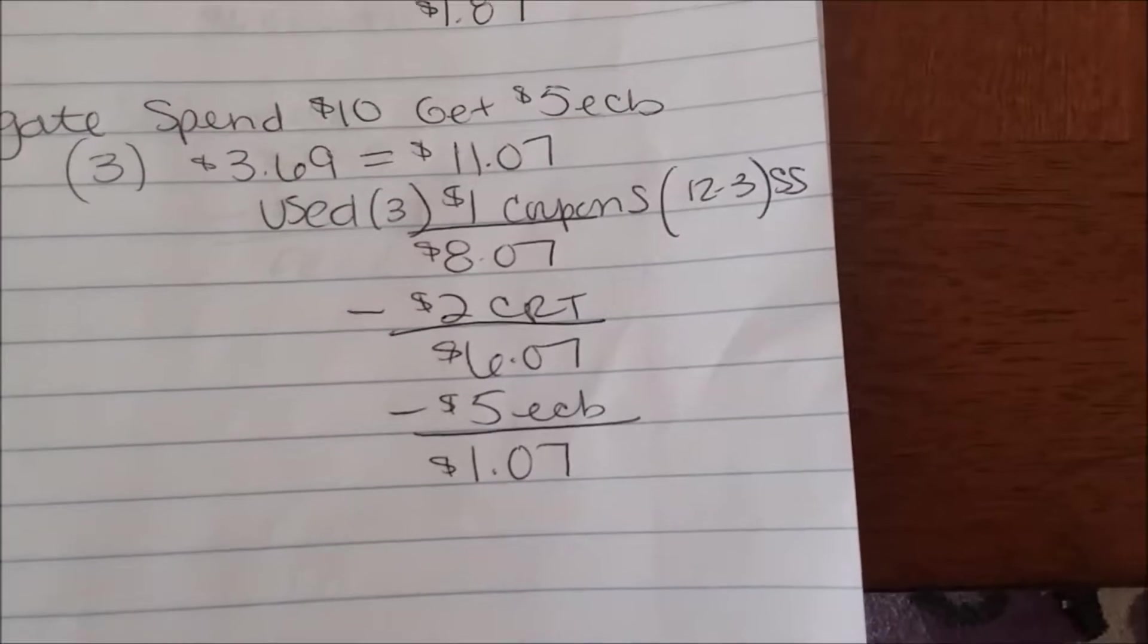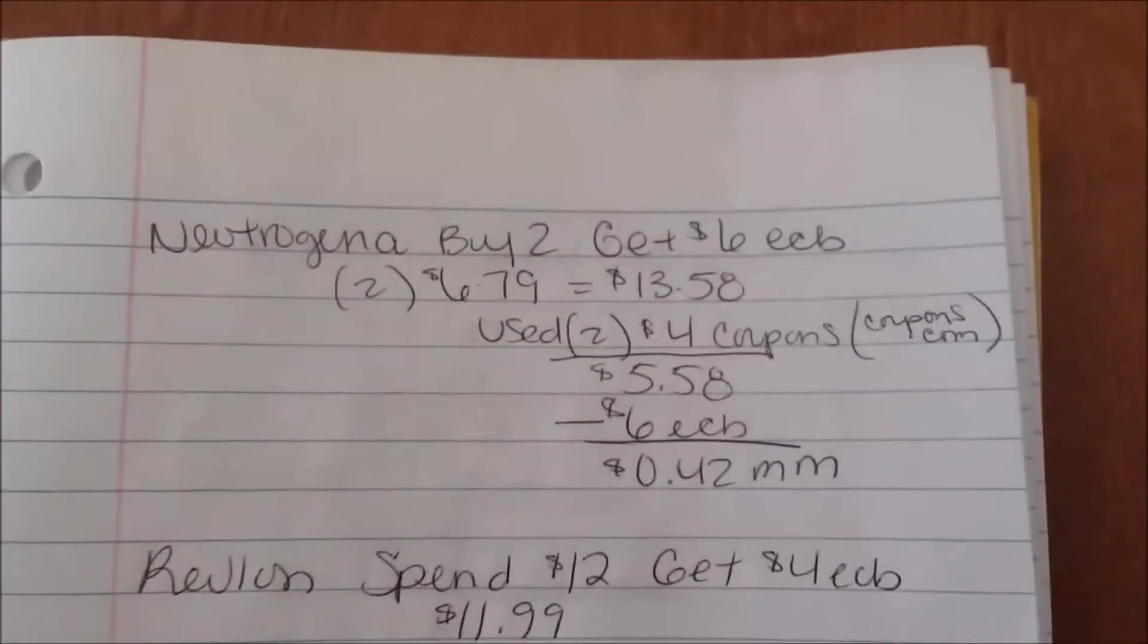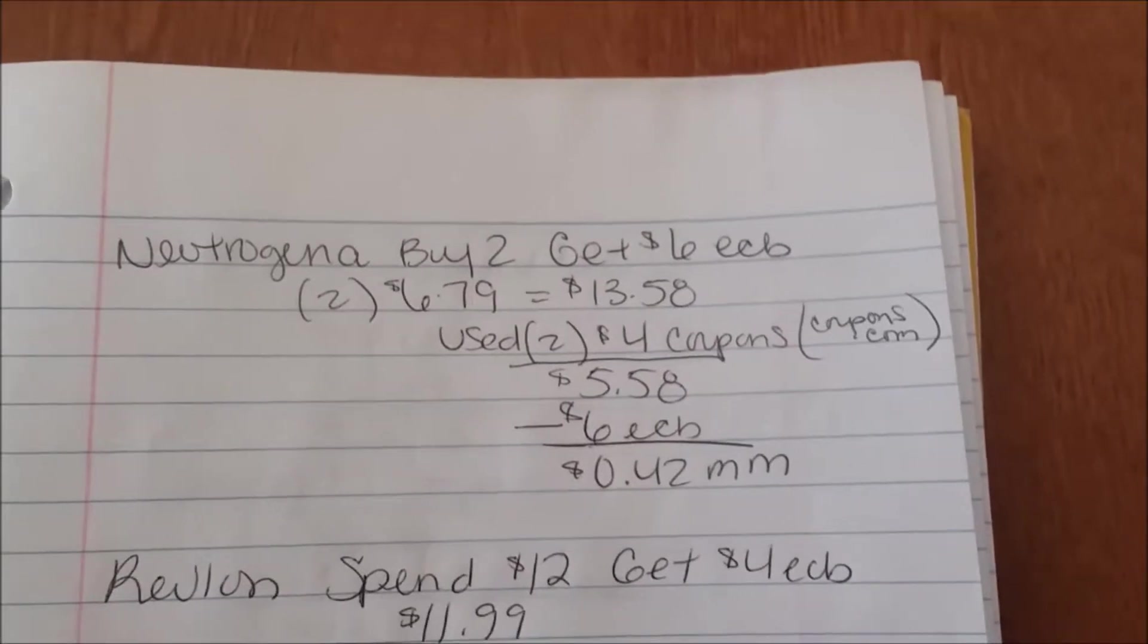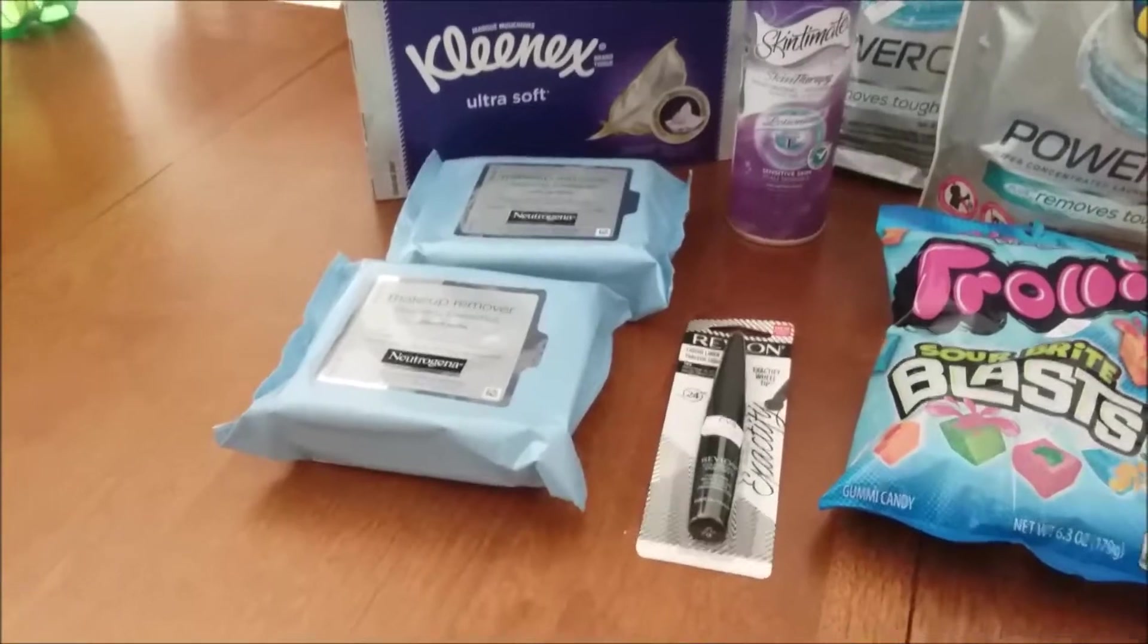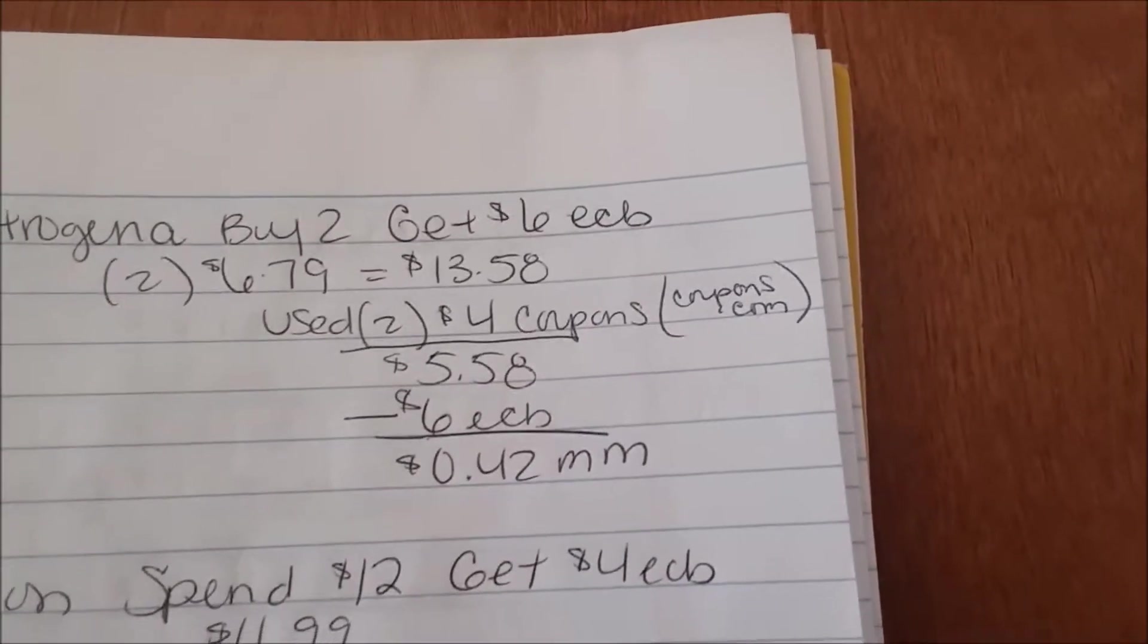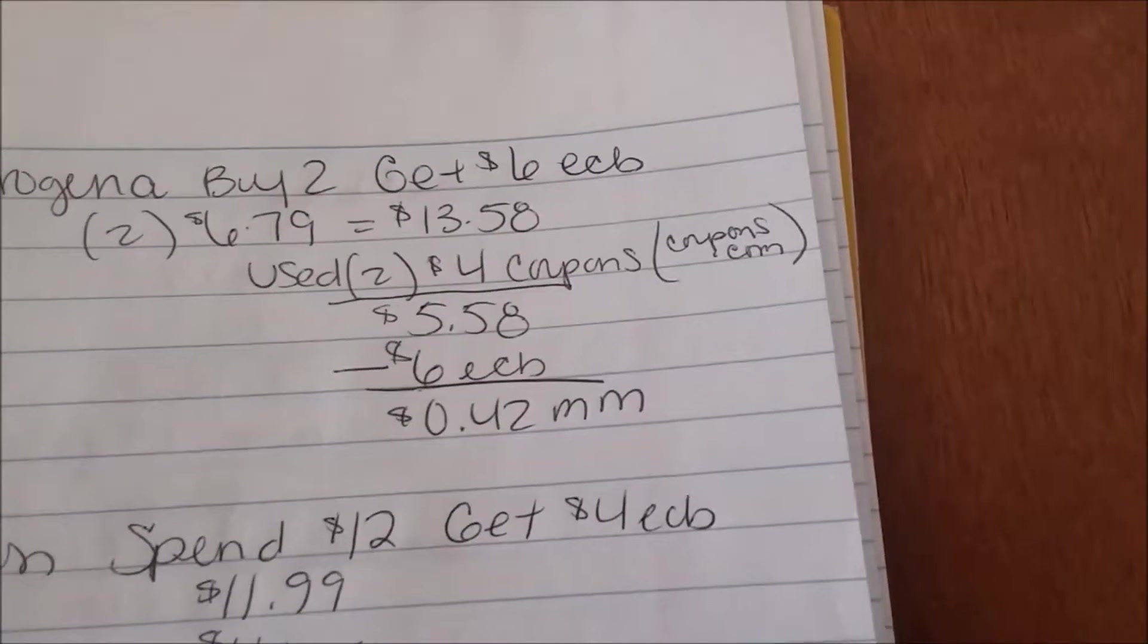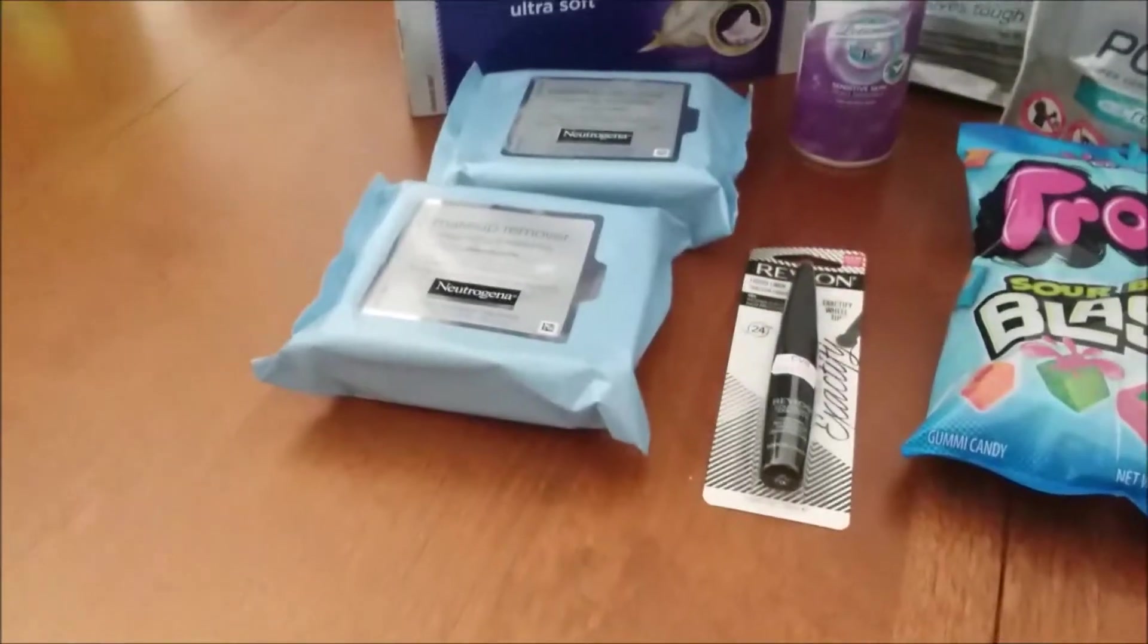The Neutrogena is buy two, you're gonna get a $6 ECB. So I picked up two for $6.79, two makeup wipes which is gonna be the cheapest thing, which brought it to $13.58. I used two $4 coupons from coupons.com which brought it to $5.58. After getting back my $6 ECB it made it a 42 cent money maker for those two right there. That's a good deal, 42 cents, it made it free plus a 42 cent money maker.